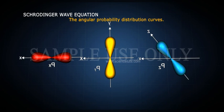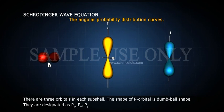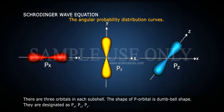The angular probability distribution curves. There are three orbitals in each subshell. The shape of P orbital is dumbbell shape. They are designated as Px, Py, Pz.